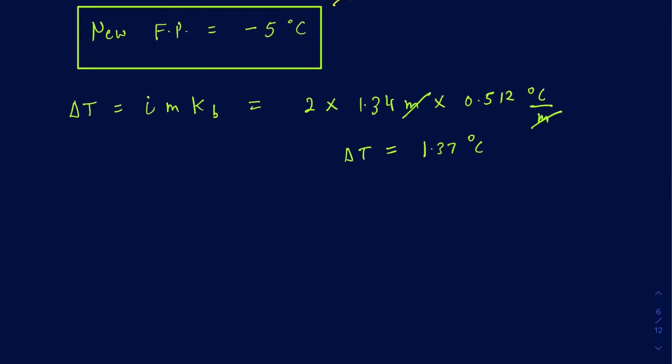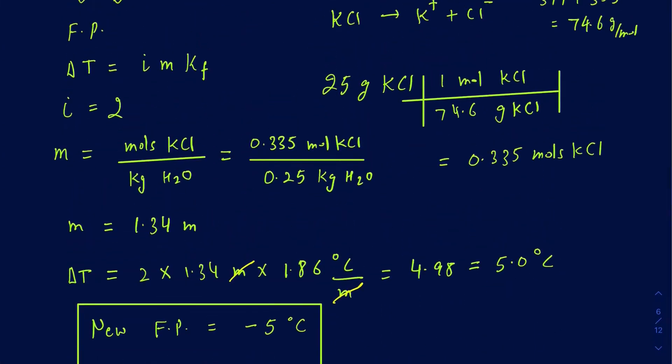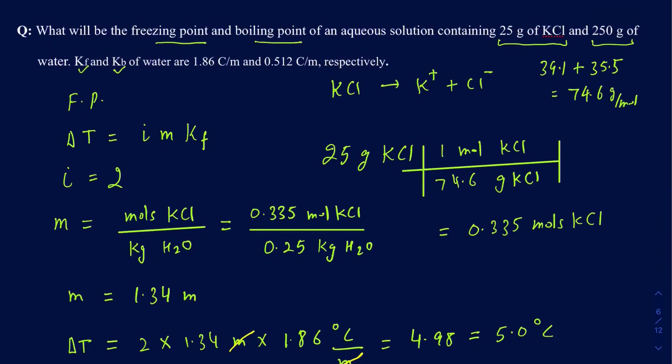So now what's going to be your new boiling point here? Remember, the normal boiling point for water is 100, so you always increase the boiling point when you add a solute into the water. So since your boiling point is going to increase, it's going to go up by 1.37. So you always do 100 plus 1.37. So you always increase the boiling point by that number, and you always decrease the freezing point by whatever you get as a delta T. So this is going to be 101.37 degrees Celsius as your new boiling point. So that's how you're going to be calculating the freezing point depression and the boiling point elevation if you're given the amount of solute added in the given amount of water.